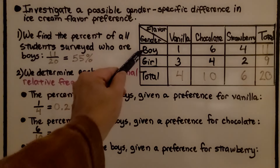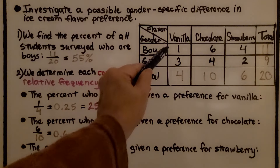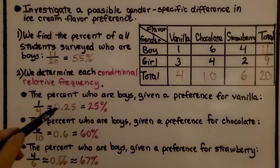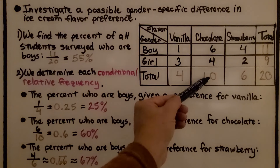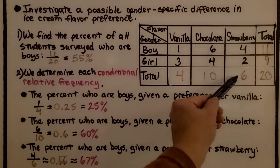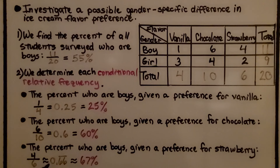The second thing we do is determine each conditional relative frequency. The percent who are boys given a preference for vanilla: we have 1 out of 4, so 1 fourth, which is 25 hundredths — 25%. The percent who are boys given a preference for chocolate is 6 out of 10, six tenths — that's 60%. And the percent who are boys given a preference for strawberry is 4 out of 6, which is approximately 67% (since the 6 repeats).